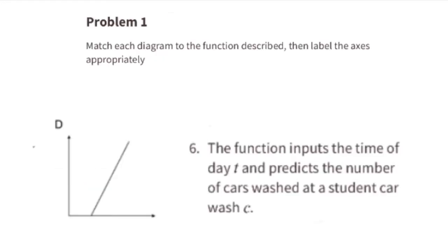Diagram D matches function G. The function inputs the time of day, T, and predicts the number of cars washed at a student car wash, C. The horizontal axis, or x-axis, represents the time of day, T, and the vertical axis, or y-axis, represents cars washed, C. This graph shows that once the students finally opened up the car wash, the number of cars washed increased at a constant rate.